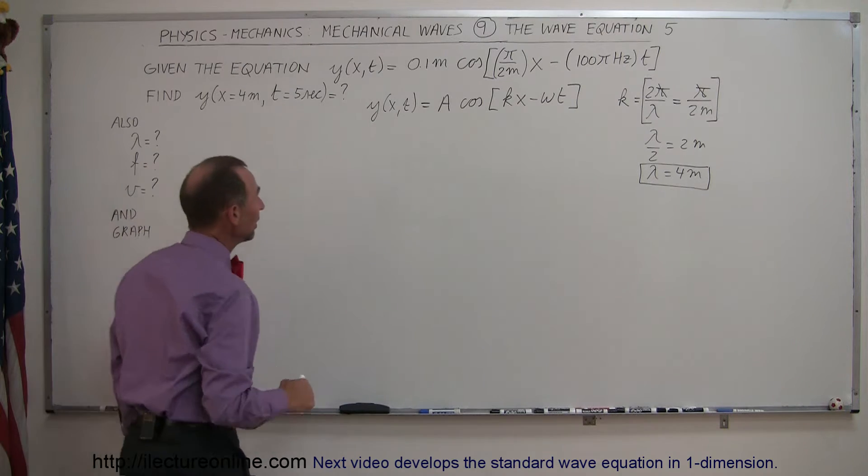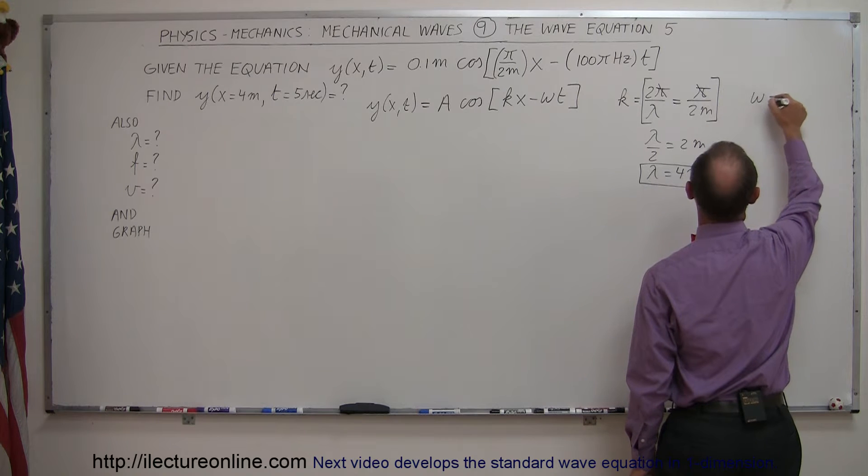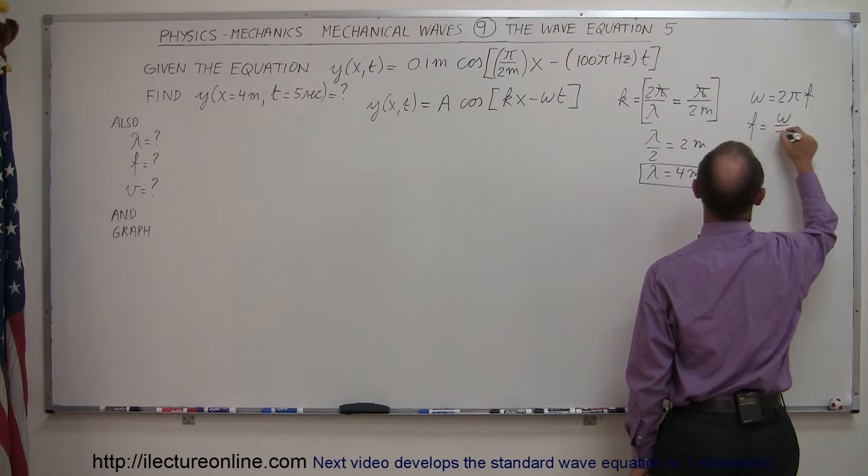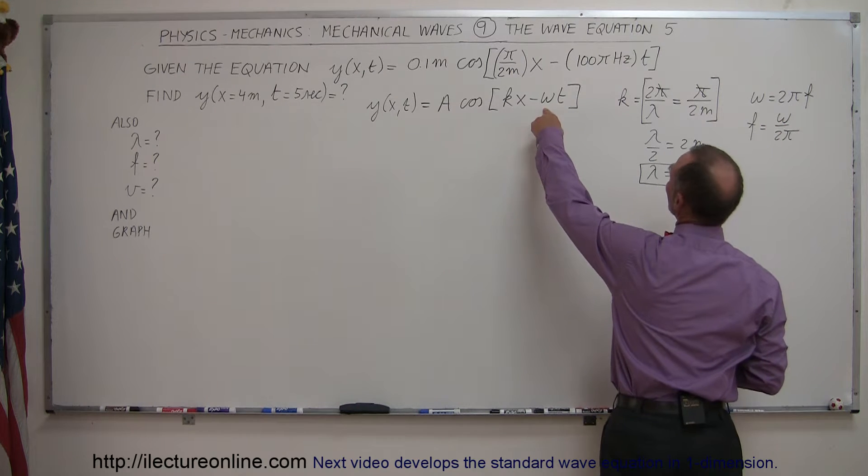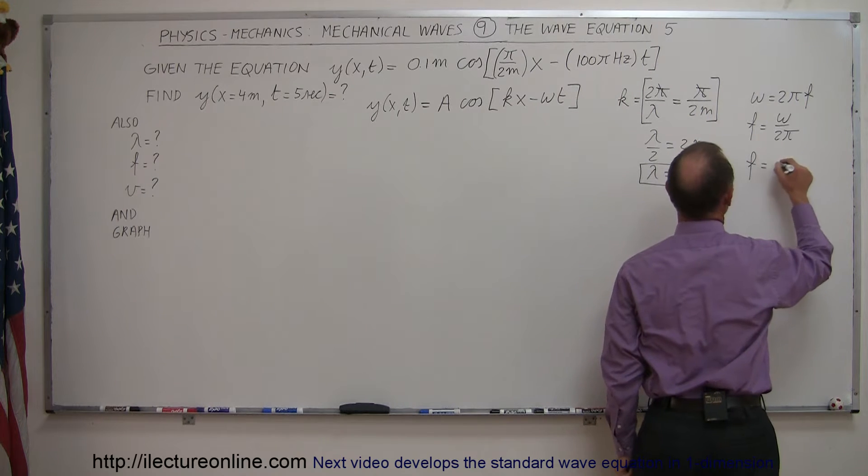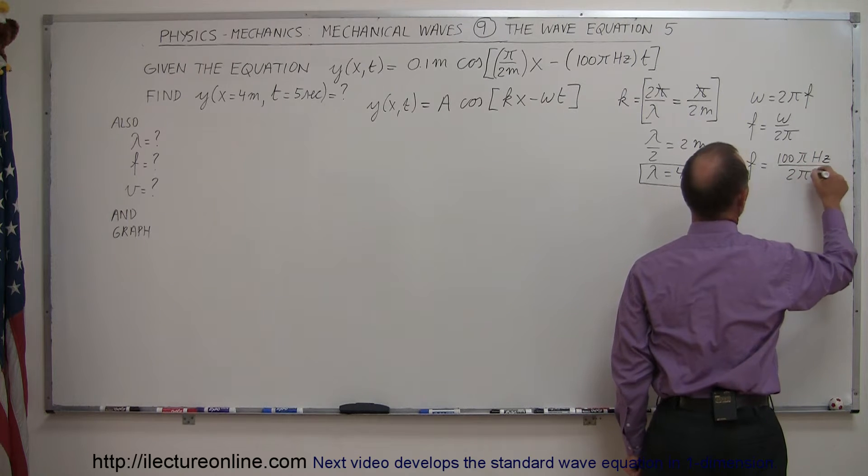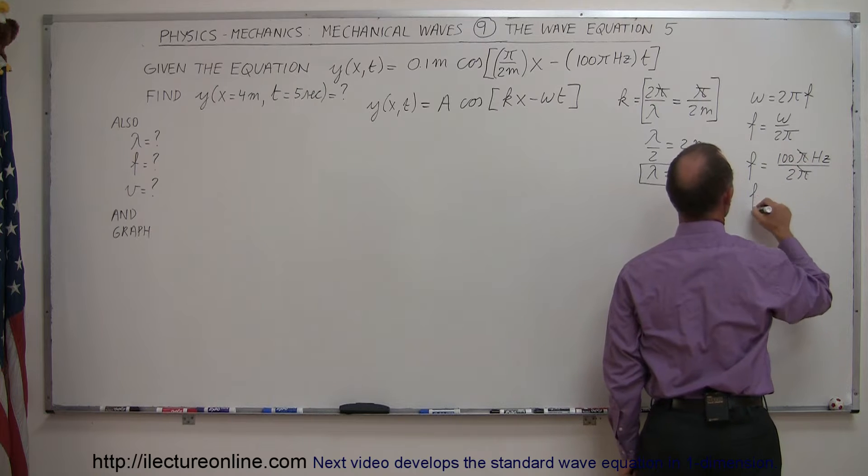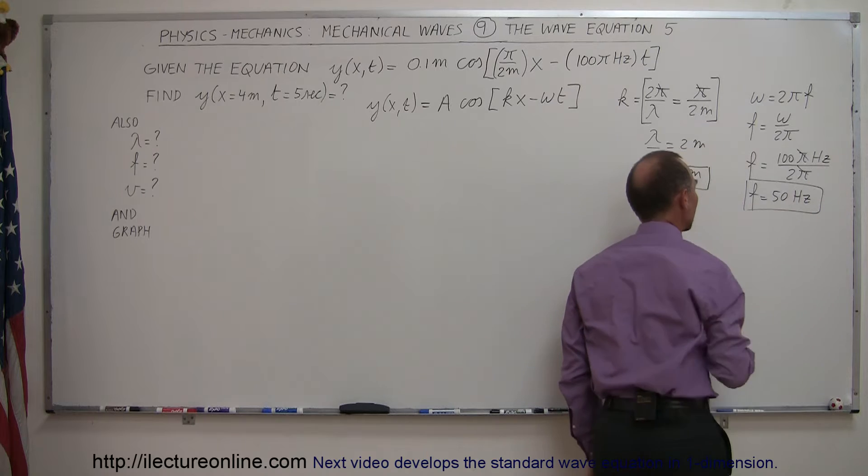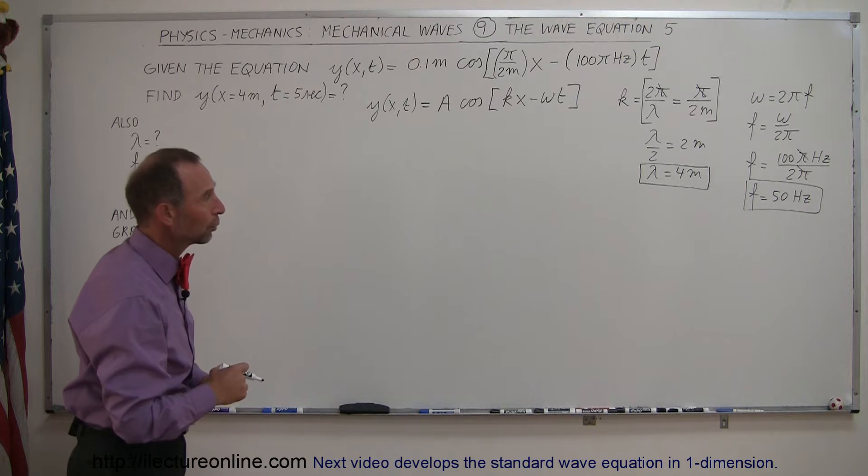We can do the same for the frequency. We know that ω equals 2π times the frequency, so the frequency equals ω divided by 2π. Omega is 100π hertz, so the frequency equals 100π hertz divided by 2π. The π's cancel out, and 2 goes into 100, so the frequency equals 50 hertz. That's the second part of the wave equation we understand.